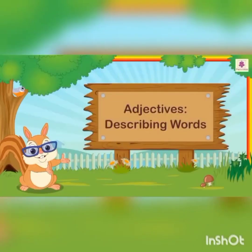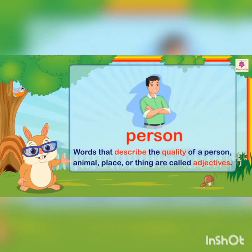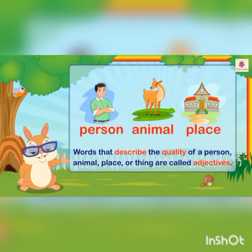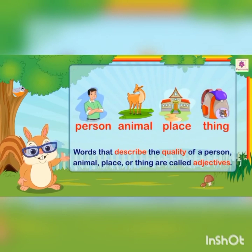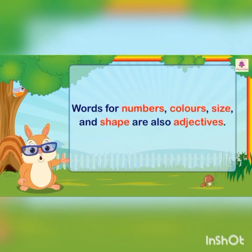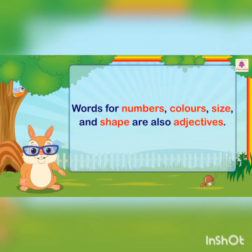Adjectives are describing words. Words that describe the quality of a person, animal, place or thing are called adjectives. Words for numbers, colors, size and shape are also adjectives.